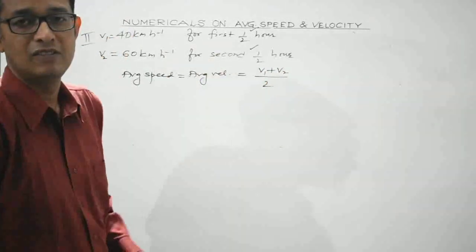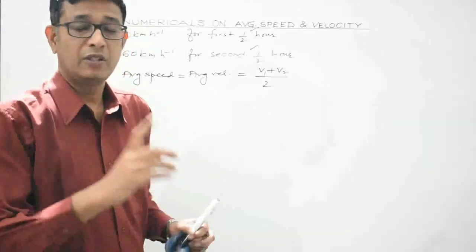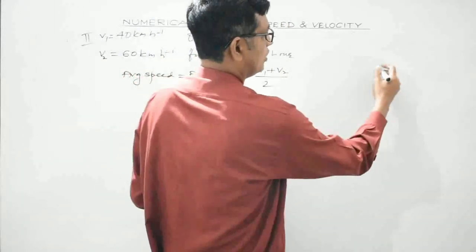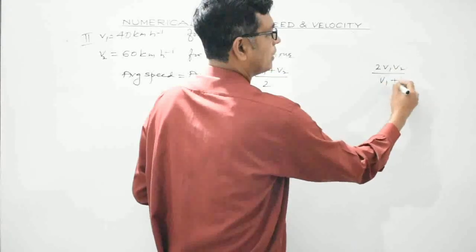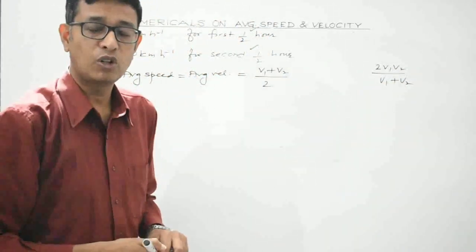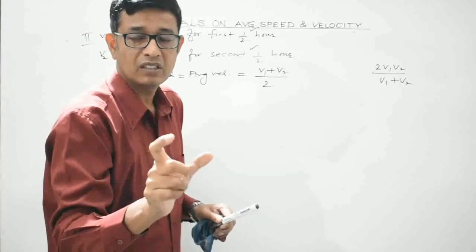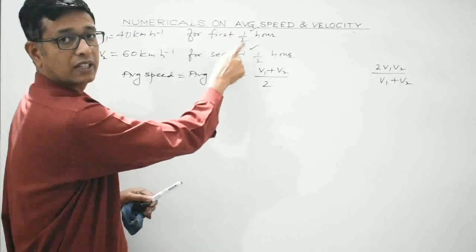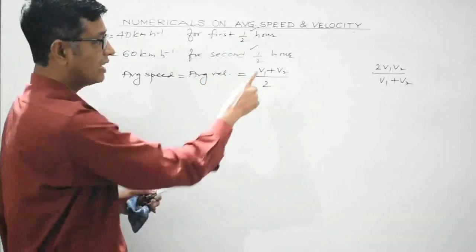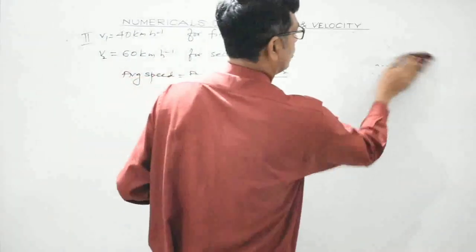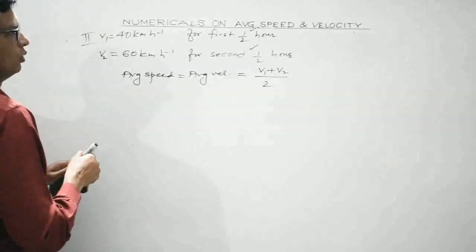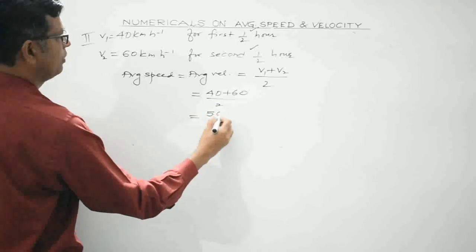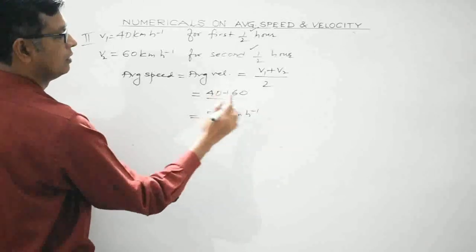The arithmetic mean formula applies when the body covers unequal distances in equal intervals of time. The harmonic mean (2V₁V₂ / (V₁+V₂)) is used when equal displacements are covered in unequal time intervals. Here: average speed = (40 + 60) / 2 = 50 km per hour.